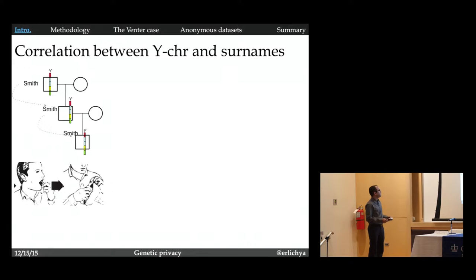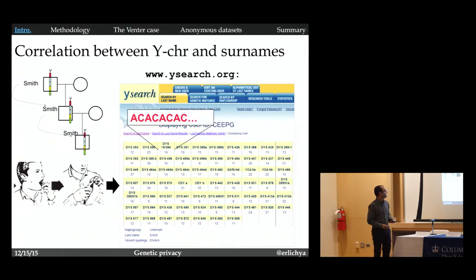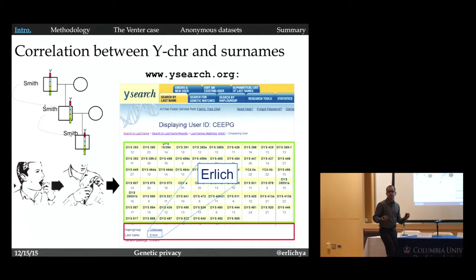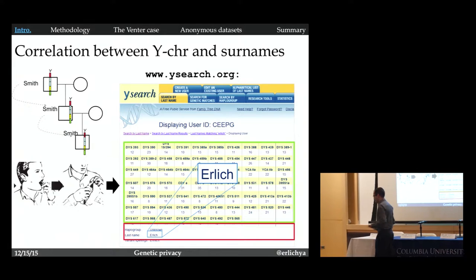There are genetic genealogy companies that take advantage of this correlation. They will send you a kit with a swab to sample DNA on your cheek. You put this swab in an envelope with 99 bucks, very important. You send it to them, and they will genotype a series of markers on the Y chromosome. These markers are called short tandem repeats. Basically, the number of these repeats is different between different individuals. They measure these repeats in multiple locations on the Y chromosome and put it on a database available online together with the surname of the individual. What you see here are my own test results. Ehrlich. I was tested and here are my own test results. The reason that people do these tests is because it's a lot of fun. You can actually find your patrilineal relatives.